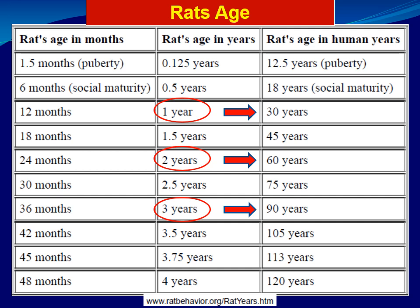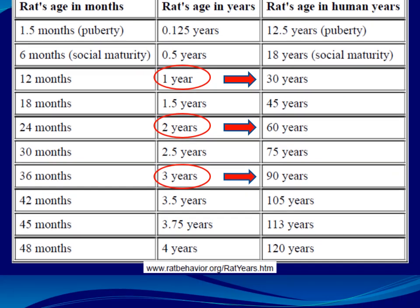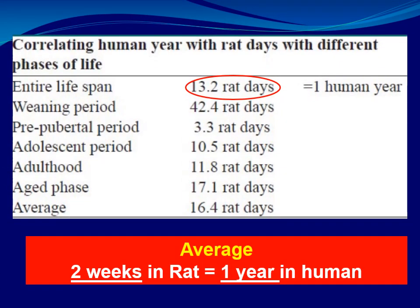This table summarizes the age of the rat and the corresponding age in humans. One year in a rat equals about 30 years in a human; two years in a rat corresponds to 60 years in a human; and three years in a rat corresponds to 90 years in a human. Correlating human years with rat days across different life phases shows that an average of two weeks in a rat equals about one year in a human — so two weeks of drug treatment in a rat equals approximately one year of treatment in a human.